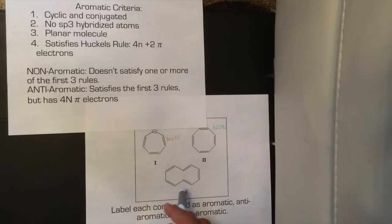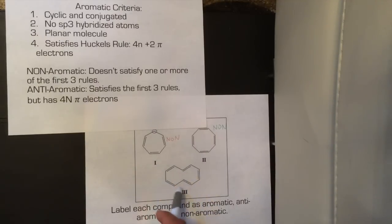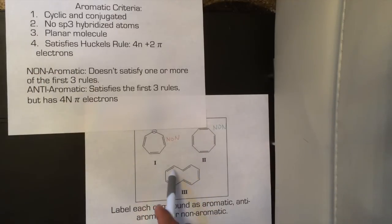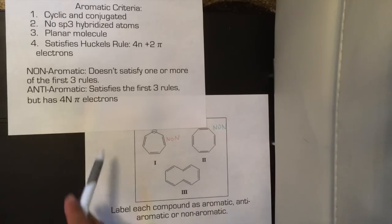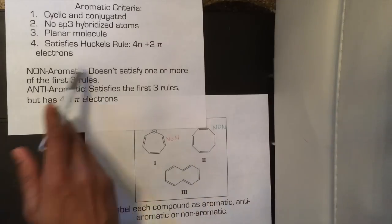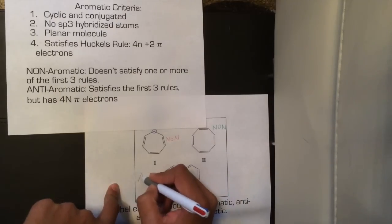Now looking at the third molecule — it is completely cyclical, it is conjugated, and there are alternating double bonds all around the ring. We can assume that it is a planar molecule. Does it satisfy Hückel's rule? It has 10 pi electrons. Therefore, this last compound is aromatic.